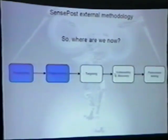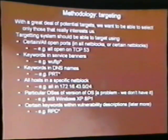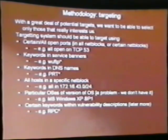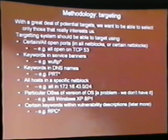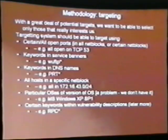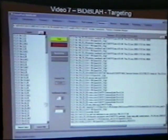So that's what we do for fingerprinting — or call it banner grabbing, that's really what it is. The problem we now have is we sit with a lot of potential targets, and we want to be able to say: I only want to look at this block, or only this port, and so forth. So we built a targeting system that allows you to select targets based on service banners, DNS names, open ports, networks, and a lot of different things.